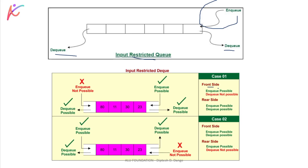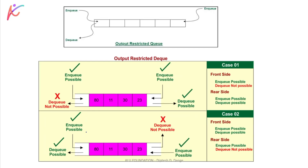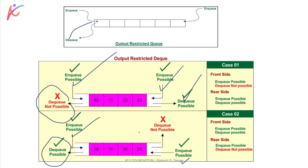Input restricted Queue में एक side NQ और एक side DQ होता है। Output restricted Queue में deletion happens at only one end — deletion is made at only one end, and insertion is able to be done at two ends। So deletion is possible at one end only, and insertion can be done at both ends। I hope you understand the concept and the detail for the exam।